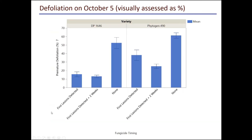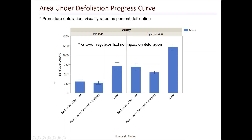Looking at premature defoliation on October 5th, you can see the difference between the two varieties: 1646 and Phytogen 490. Phytogen 490 is more susceptible. The fungicide treatments did have a significant effect — one treatment significantly reduced defoliation, and two treatments did better than one treatment for Phytogen 490. You could not distinguish between the one and two treatment responses for 1646. There was no significant impact of growth regulator on reducing defoliation, which was an important finding.